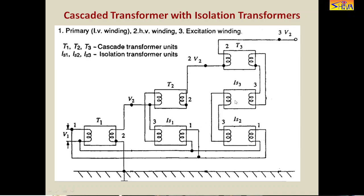Isolation transformers have a voltage ratio of 1:1, so whatever is the input voltage to the primary winding, the same is the output voltage of the secondary winding. This acts as the excitation winding for the second stage as well as the third stage. The same primary voltage is given but it is not fed through the first stage of the cascaded transformer, so the previous drawbacks of large excitation requirement and loading of the first unit are avoided.